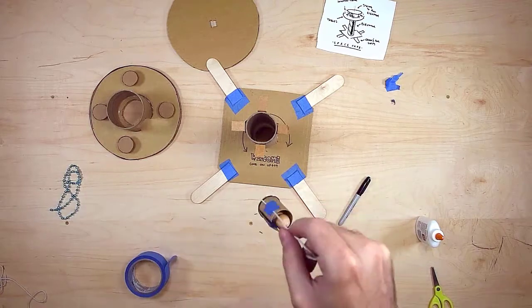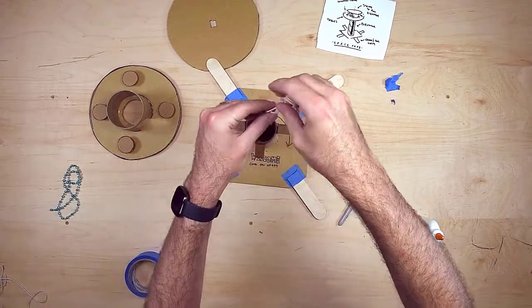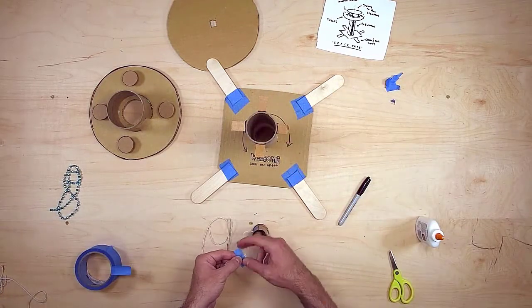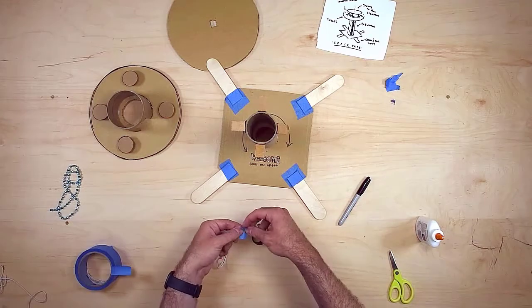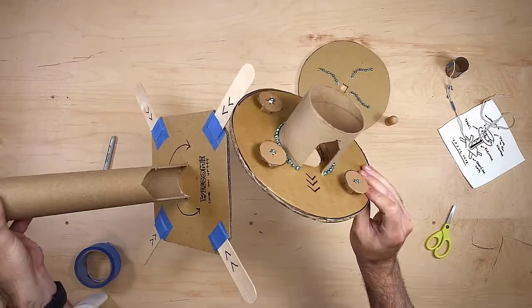I test the elevator to make sure it's working before I move on and notice that it would actually be a little better if I taped the two strings together just above the top of the elevator. With the elevator done, I take a break and add some decorations to the cafe using some beads and markers.